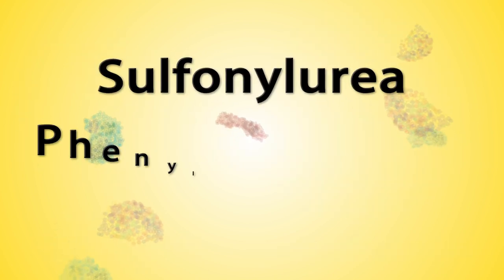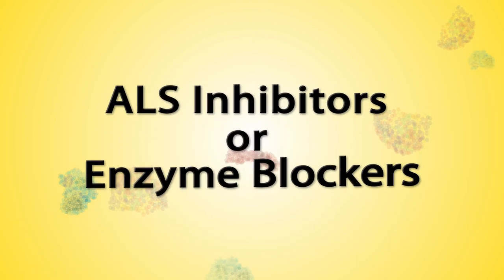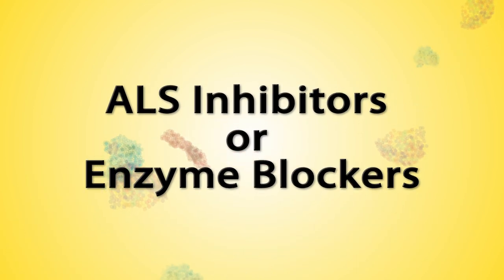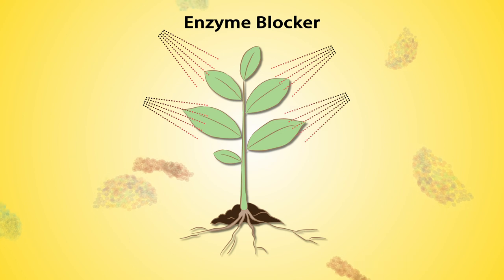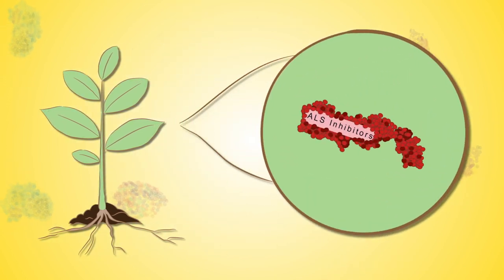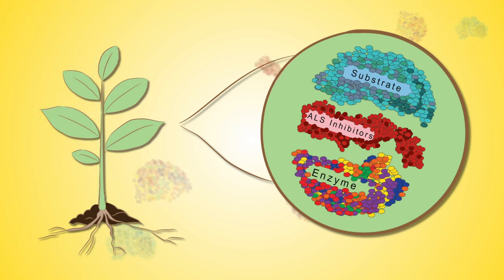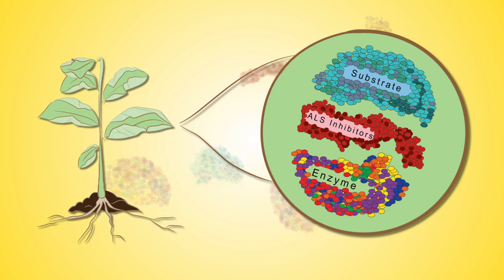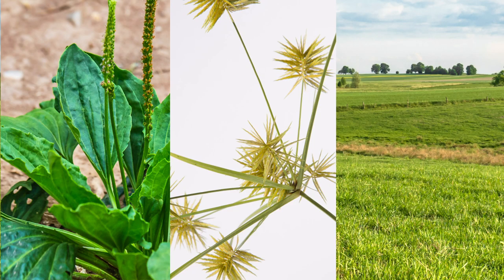Sulfonylurea, phenylpyrilazine, and imidazolinone are examples of ALS inhibitors or enzyme blockers. They are chemicals that block the normal function of an enzyme called acetylactate synthase, or ALS. This enzyme is essential in amino acid or protein synthesis. Without proteins, plants starve to death. Enzyme blockers kill a wide range of plants, including broadleaf weeds, nutsedges, and grasses.